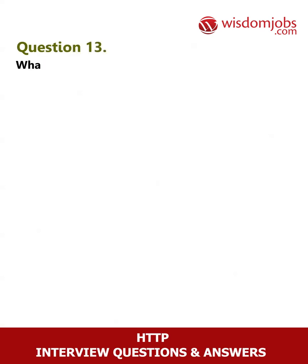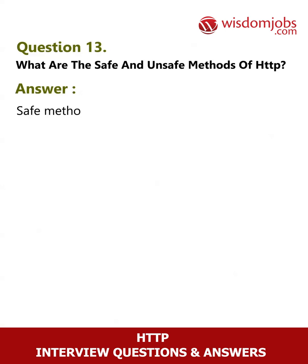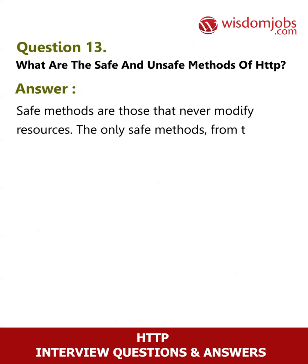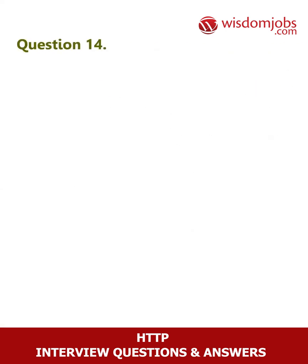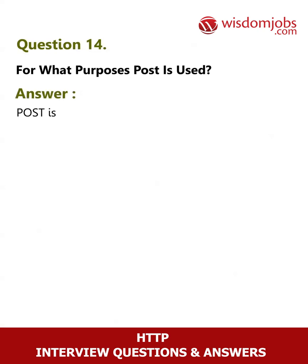Question 13: What are the safe and unsafe methods of HTTP? Answer: Safe methods are those that never modify resources. The only safe method from the four listed is GET. The others are unsafe because they may result in a modification of the resources.